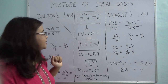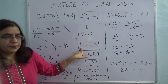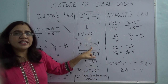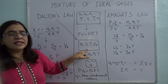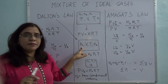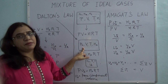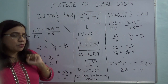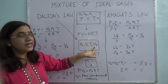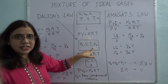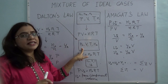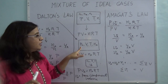Now let's consider a case in which I have only component A. If I have only component A and it occupies the same volume at the same temperature, then the pressure exerted by this gas A alone will be less than the total pressure exerted by the mixture. Let's denote that pressure as PA and call it the partial pressure of gas A. Number of moles of A is Na, no other gas is present, and it is at temperature T occupying the same volume V.